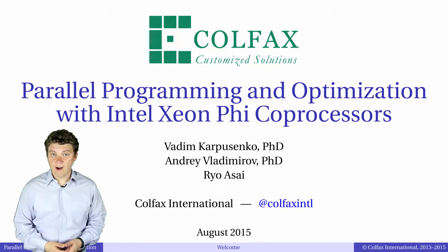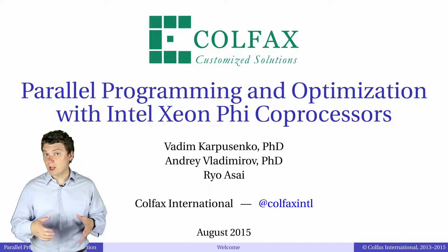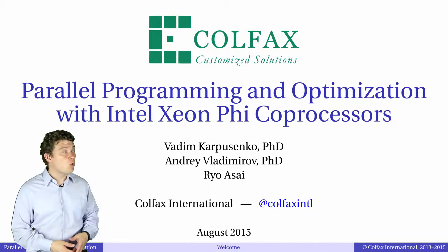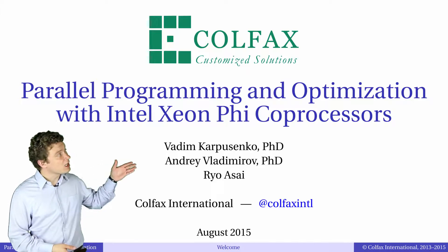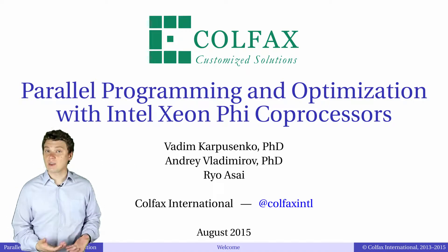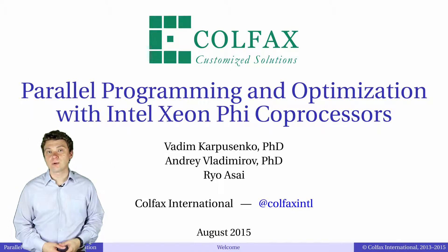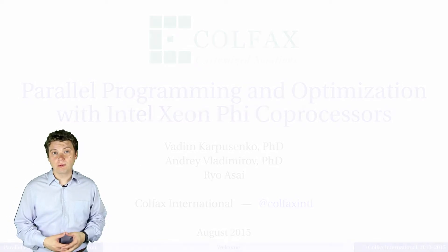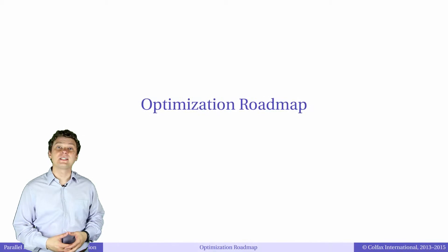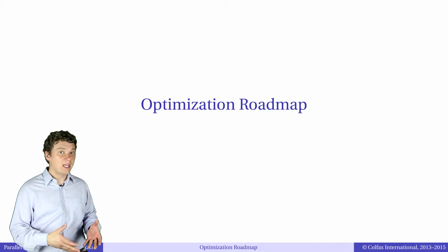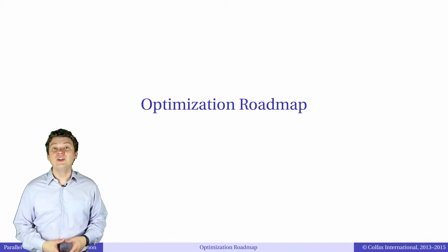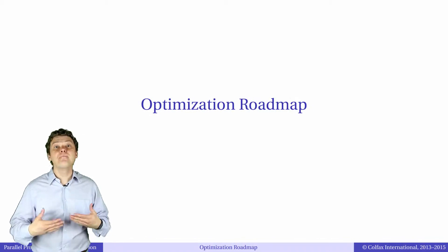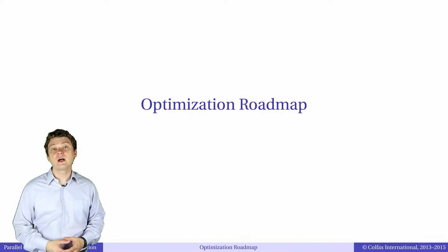Welcome to chapter 5, episode 5.1 of our video course: Parallel Programming and Optimization with Intel Xeon Phi processors. In this episode we will talk about the optimization roadmap – the steps you need to take to get the maximum performance out of your application.